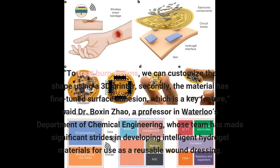To treat burn victims, we can customize the shape using a 3D printer. Secondly, the material has fine-tuned surface adhesion, which is a key feature, said Dr. Buxin Zhao, a professor in Waterloo's Department of Chemical Engineering, whose team has made significant strides in developing intelligent hydrogel materials for use as a reusable wound dressing.